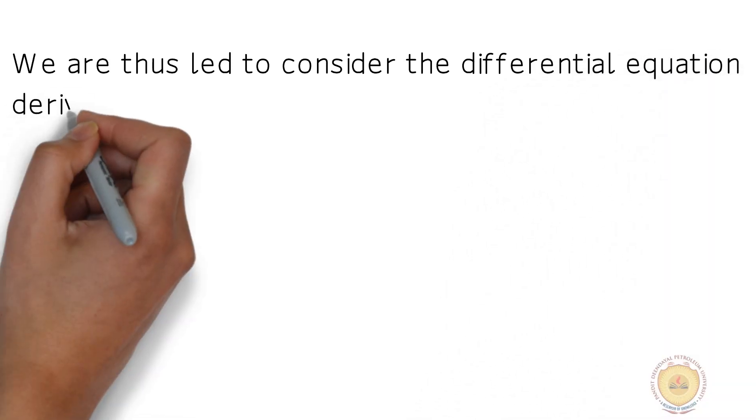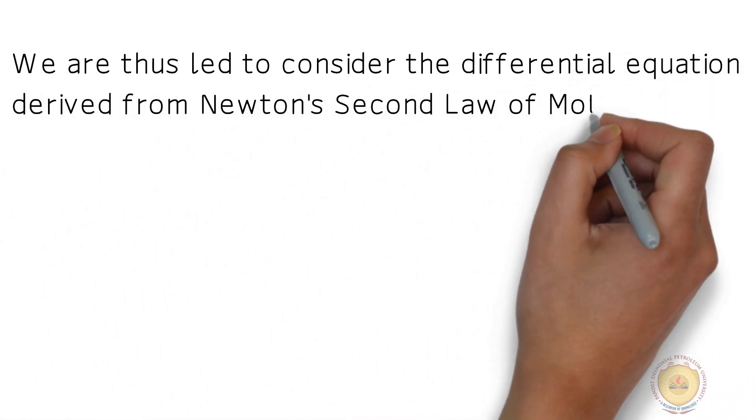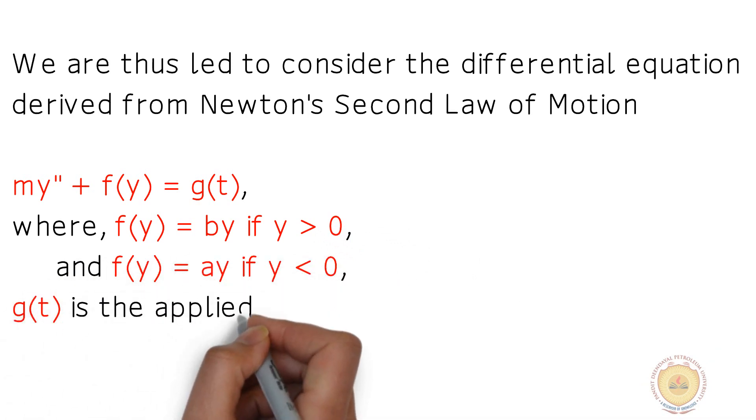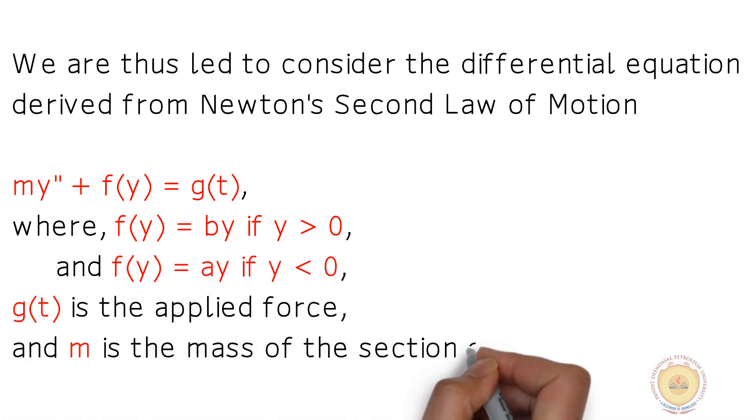We are thus led to consider the differential equation derived from Newton's second law of motion: my'' + f(y) = g(t), where f(y) = By if y > 0, and f(y) = Ay if y < 0. g(t) is the applied force, and m is the mass of the section of the roadway.